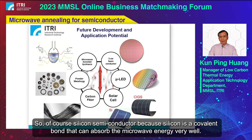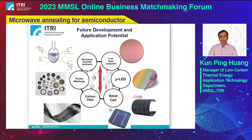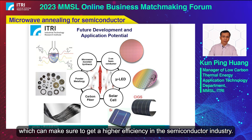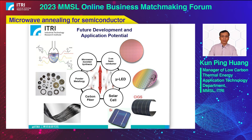For silicon semiconductors, because silicon is a covalent bond material, it can absorb microwave energy very well. Microwave annealing can be used for device annealing, ensuring higher efficiency in the semiconductor industry. That's all. Thank you.